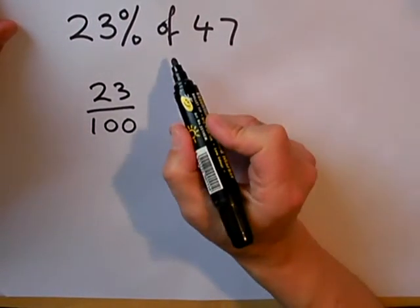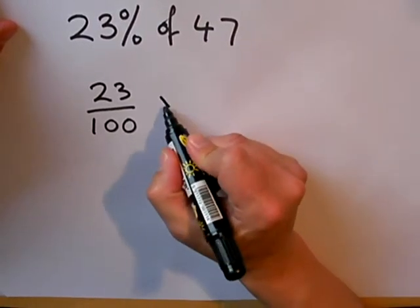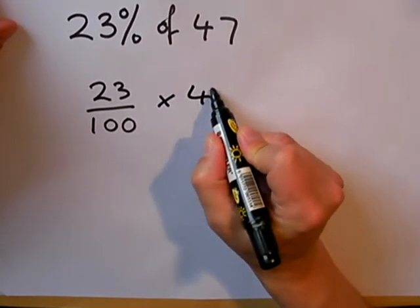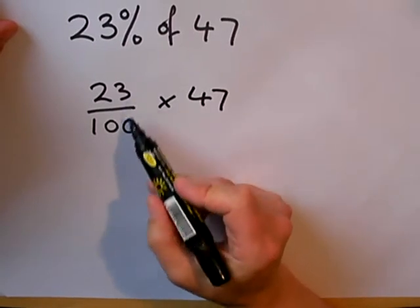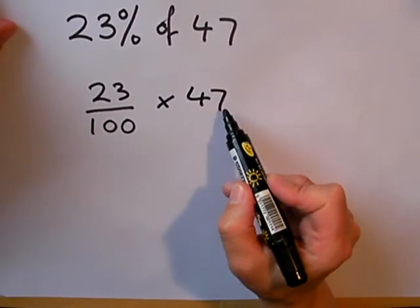When we use the word of in mathematics, quite often it means multiplication. So we're going to work out 23 out of 100, 23% multiplied by 47.